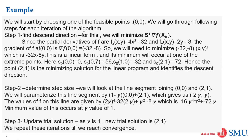We use the new partial derivative — minus 32x plus 8y — and substitute all boundary points. At (0,0) we get 0; at (0,7) we get minus 56; at (1,0) we get minus 32; at (2,1) we get minus 72. Among these, minus 72 is the bare minimum value. The coordinate corresponding to that bare minimum is (2,1). So (2,1) is our new minimum point.